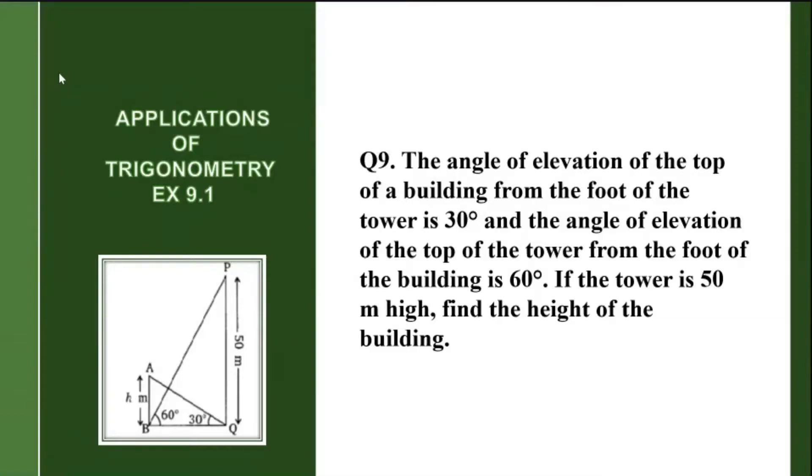The question states that the angle of elevation of the top of a building from the foot of the tower is 30 degrees, and the angle of elevation of the top of the tower from the foot of the building is 60 degrees. If the tower is 50 meters high, find the height of the building.